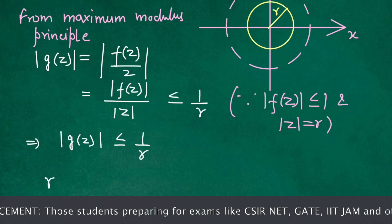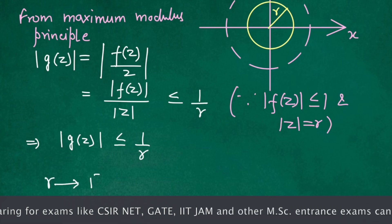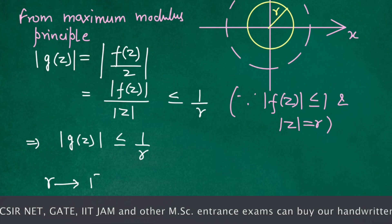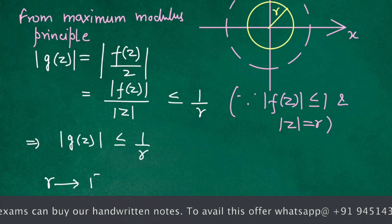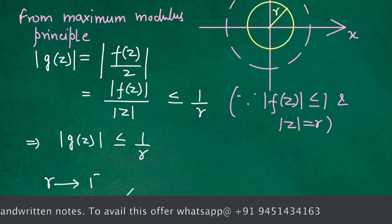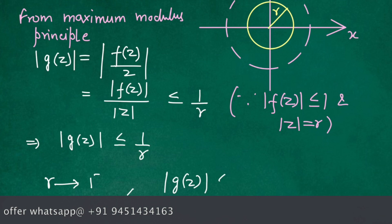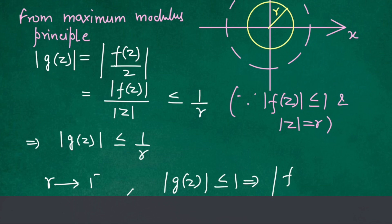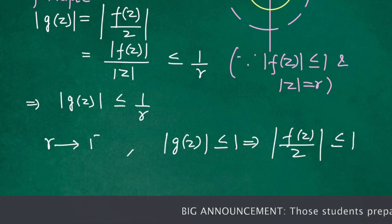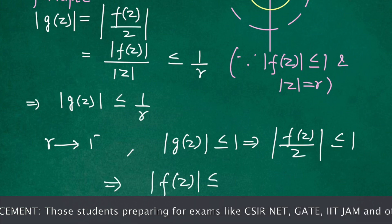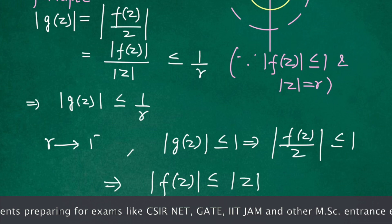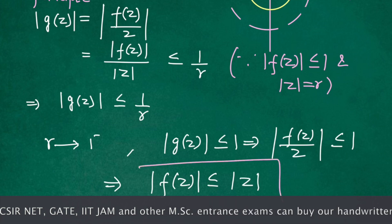Now if we let r tend to 1 from below — why 1 minus? Because disk D does not include the boundary. When we take this limit, |g(z)| ≤ 1. This implies |f(z)/z| ≤ 1, and from here we have |f(z)| ≤ |z|. This completes the proof.